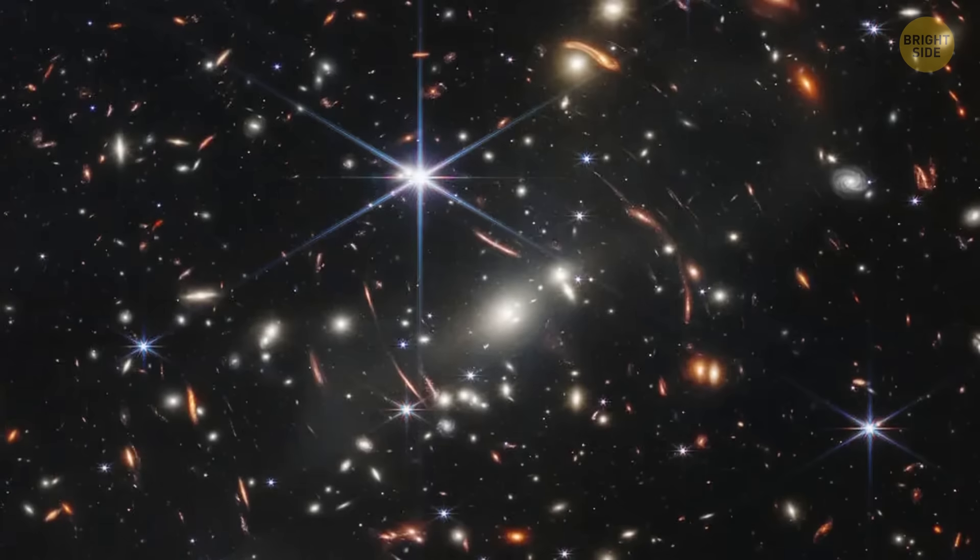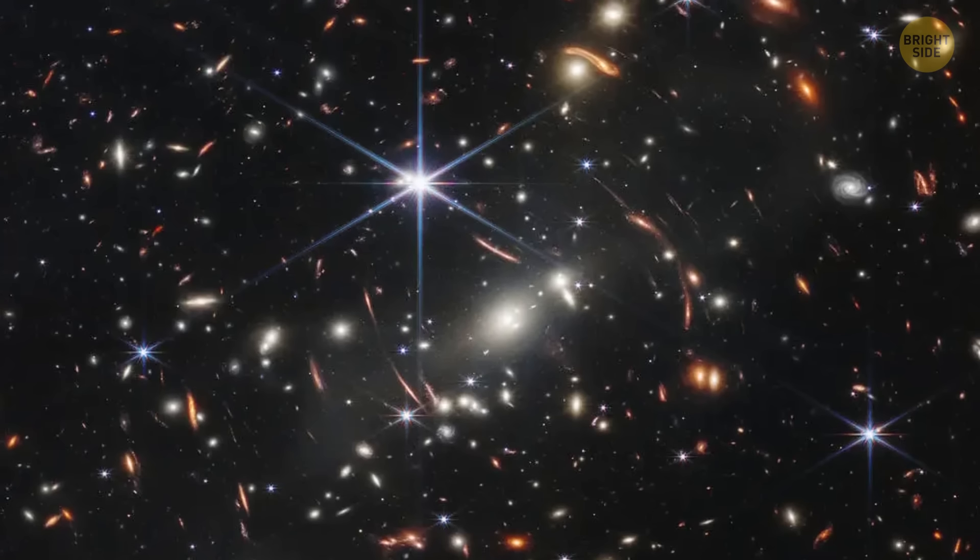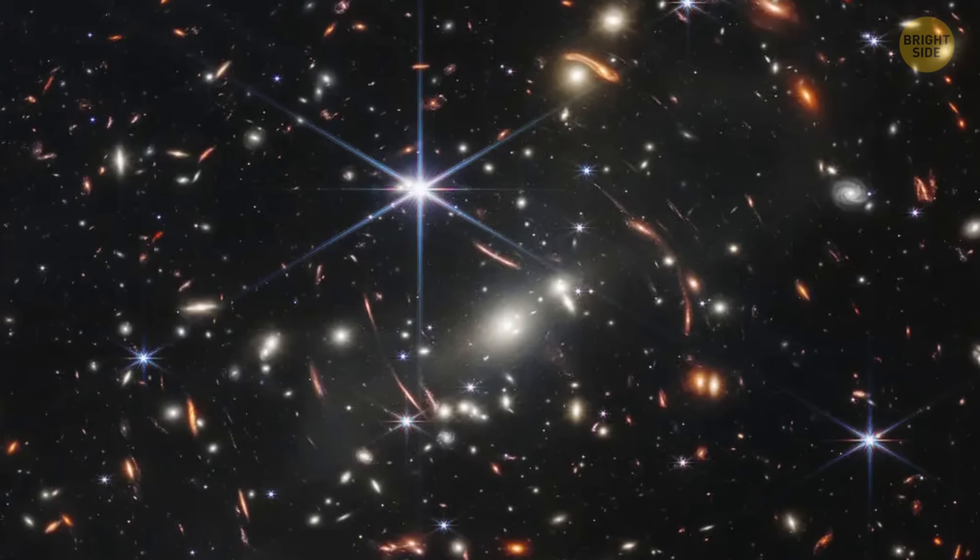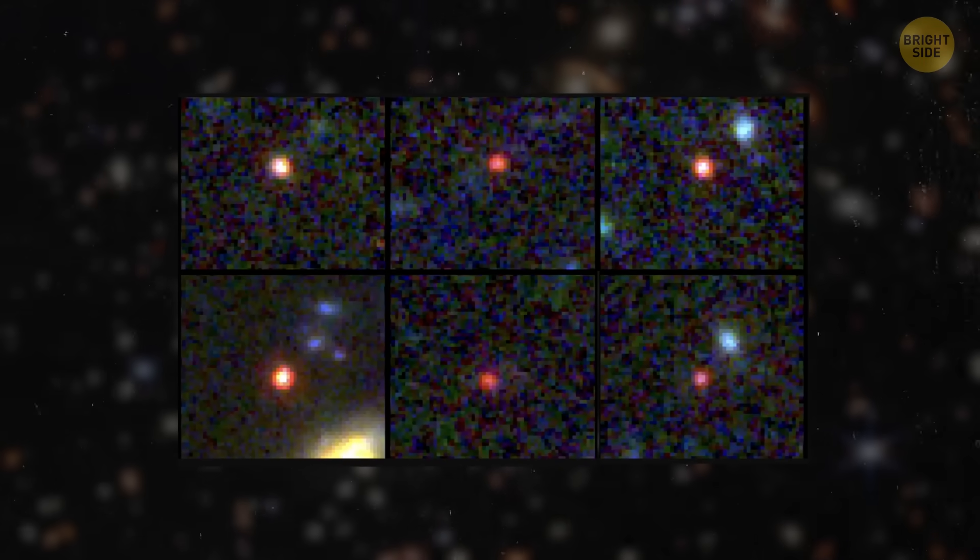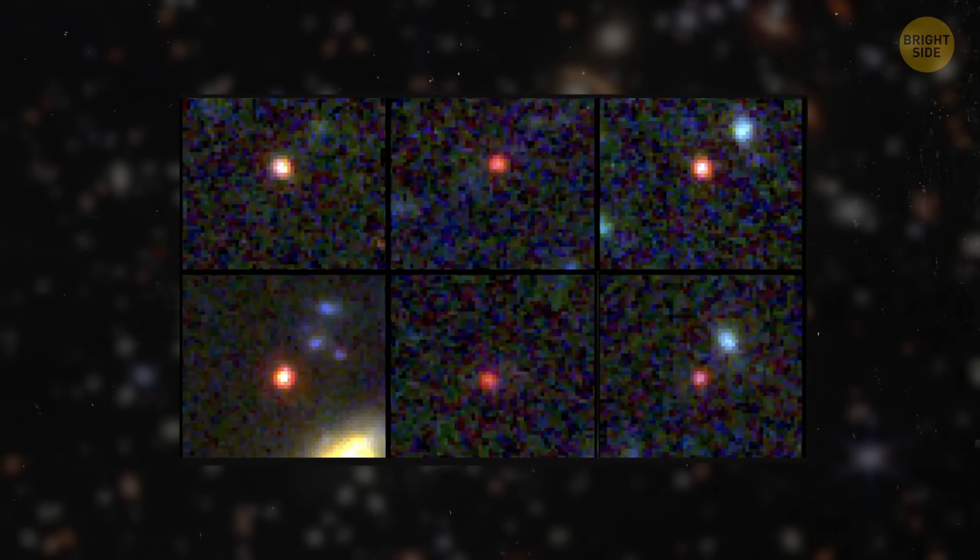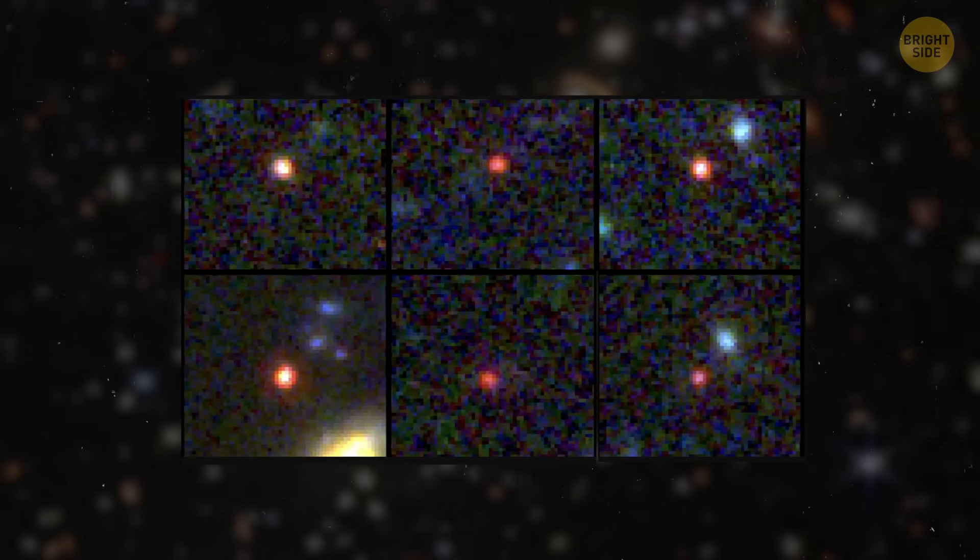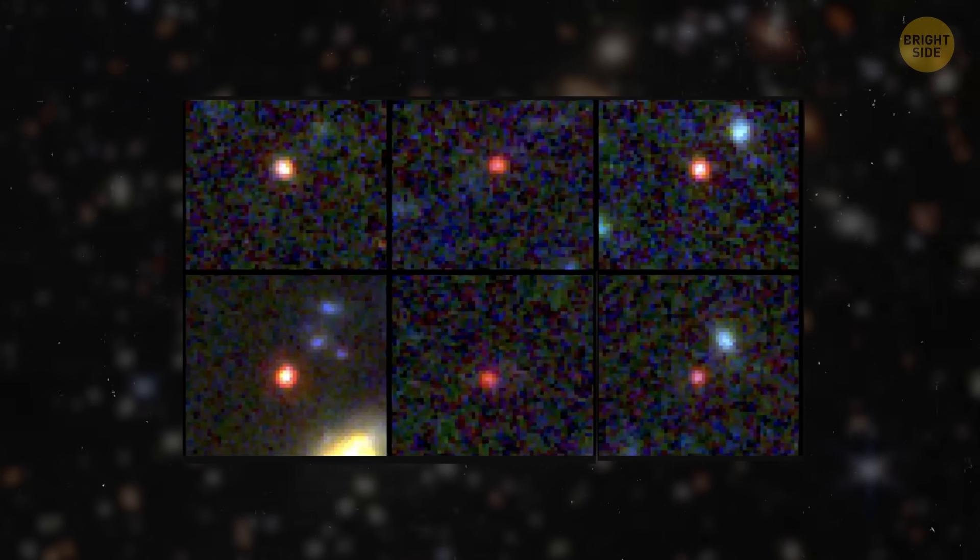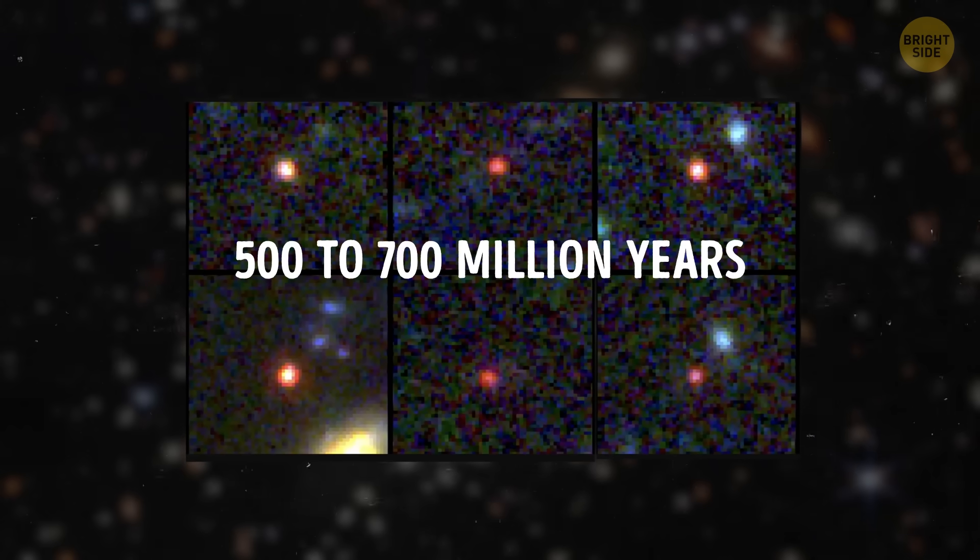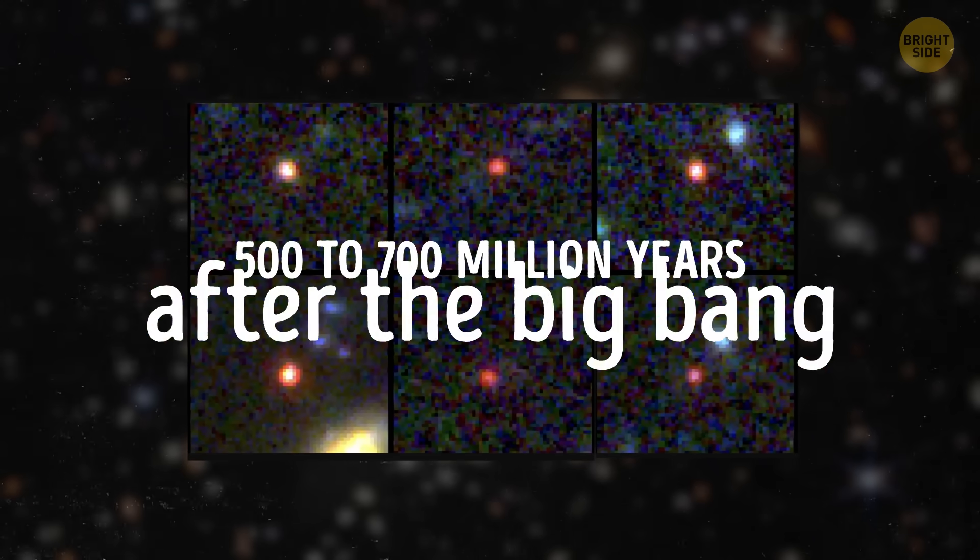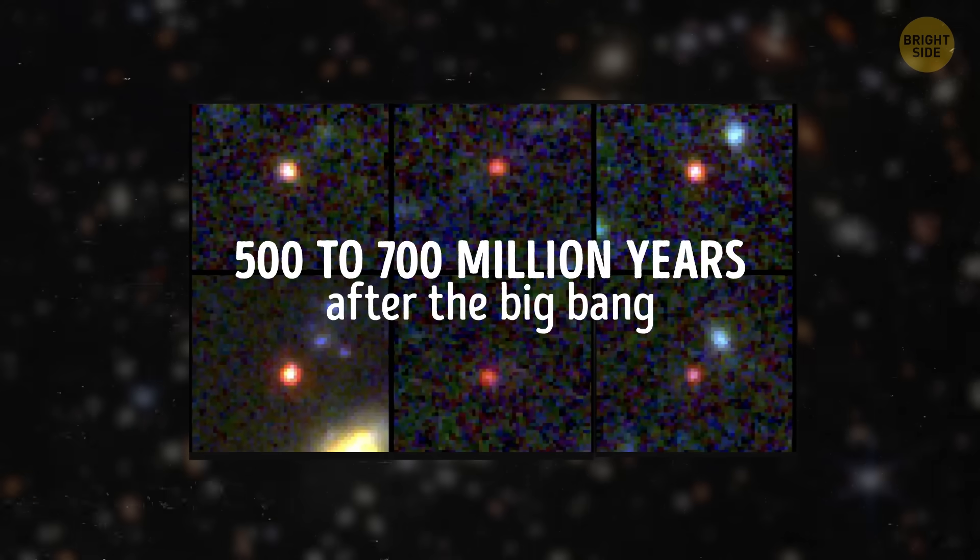These six galaxies, as massive as our home Milky Way, are full of mature red stars. They're so far away from us that they look like tiny reddish dots, even to this extremely powerful telescope. Astronomers have analyzed the light coming from these galaxies and estimated their age. They appeared 500 to 700 million years after the Big Bang.